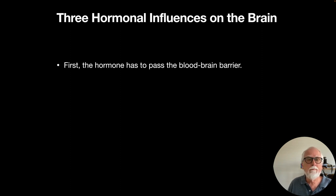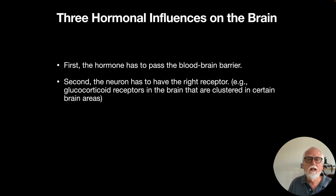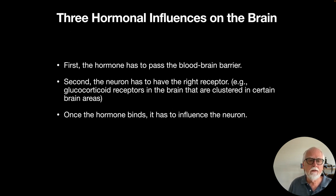Let's talk about the blood-brain barrier. It's basically a mechanism that keeps most chemicals out of the brain. We need it because the brain lacks the immune system found in the rest of the body — we need it to keep pathogens from entering brain cells and making us sick. The blood vessels circulating throughout the brain have to keep pathogens from entering neurons. Once hormones get through the blood-brain barrier to a particular group of neurons, those neurons must have the right receptor — specific receptors are clustered at specific locations in the brain.